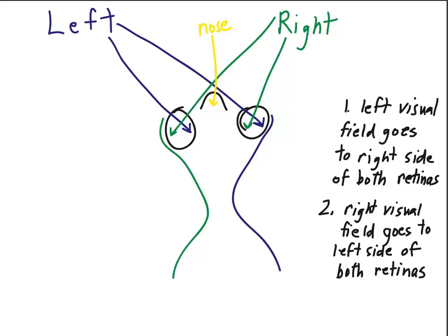And stays on the same side that it was on before. If we take a look at the nasal portion of the right eye, we can see that it goes along the optic nerve. But when it reaches the optic chiasm, it actually crosses over to the opposite side. And the same is true of the left nasal retina. It crosses at the optic chiasm to the opposite side of the brain.